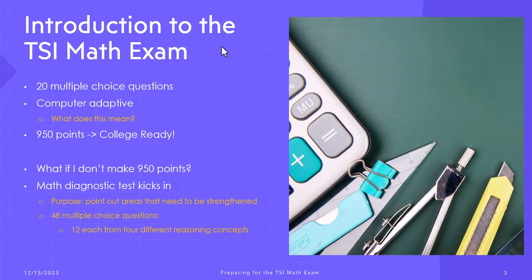These questions will test your knowledge in four different areas: quantitative reasoning, algebraic reasoning, geometric and spatial reasoning, and probabilistic and statistical reasoning. If you reach level 6 on the math diagnostic, you are also deemed college ready.